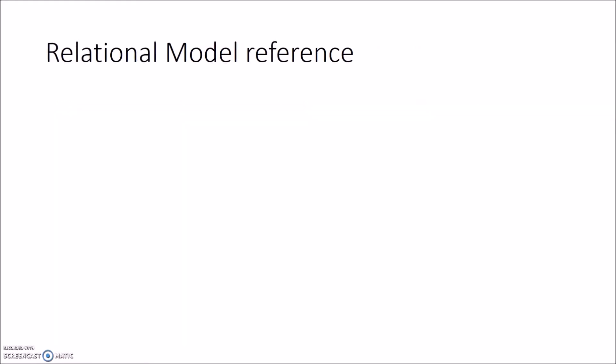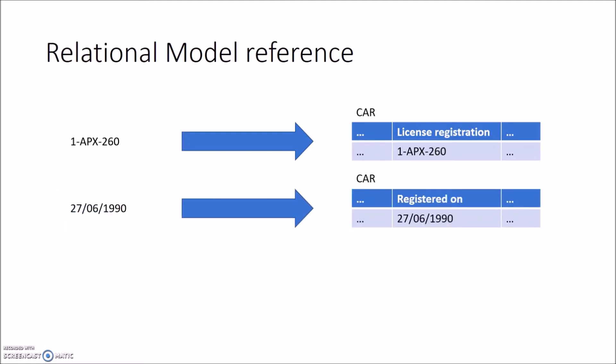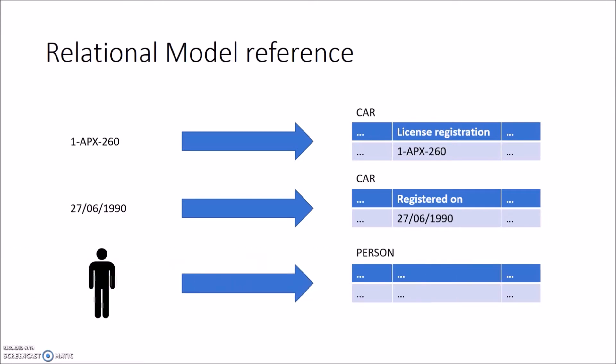We have a license registration, and in the relational schema this will be mapped to an attribute in a table — in this case the table 'car'. A second example is a date that could be mapped to an attribute in a table of the relational schema. Both are lexical object types, but when we have a non-lexical object type, for example 'person', this would be mapped to a table itself in a relational schema.